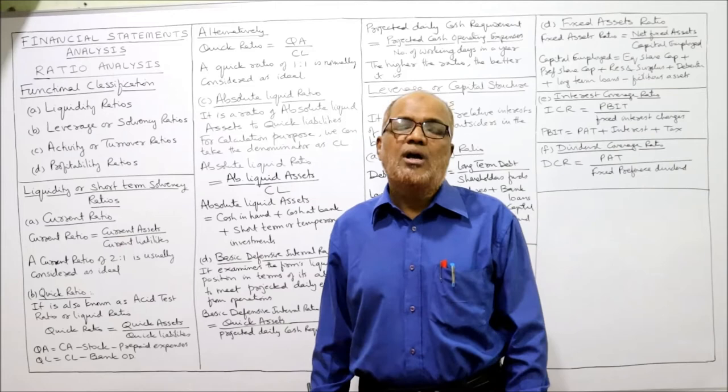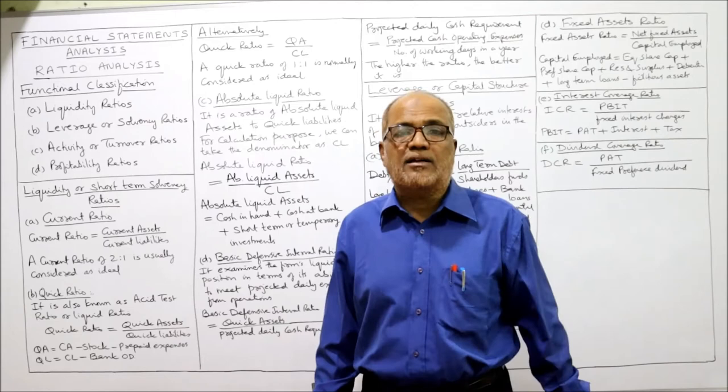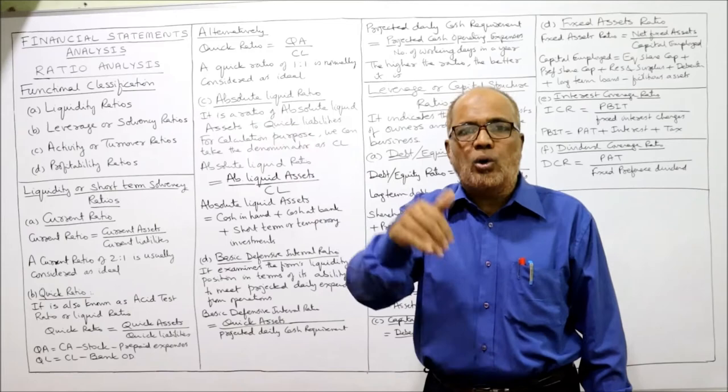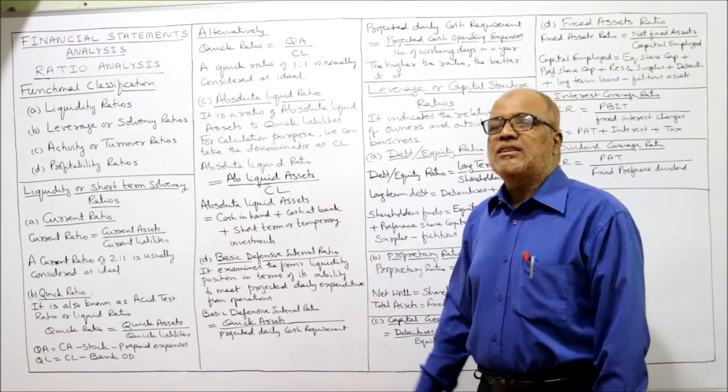If your quick ratio is less than 1 is to 1, your liquidity position is not good. If your quick ratio is more than 1 is to 1, say 4 is to 1, that means you have idle funds and the business is not properly using the funds available. The quick ratio should be maintained at 1 is to 1.